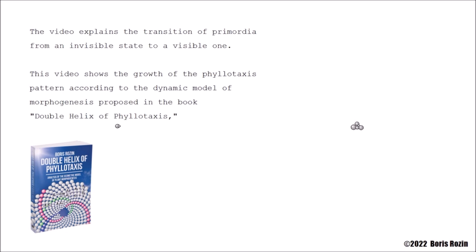The video explains the transition of primordia from an invisible state to a visible one. This video shows the growth of the phyllotaxis pattern according to the dynamic model of morphogenesis proposed in the book Double Helix of Phyllotaxis.